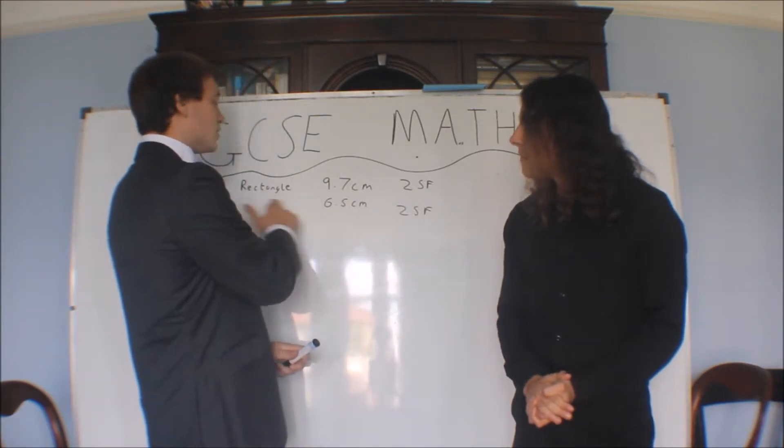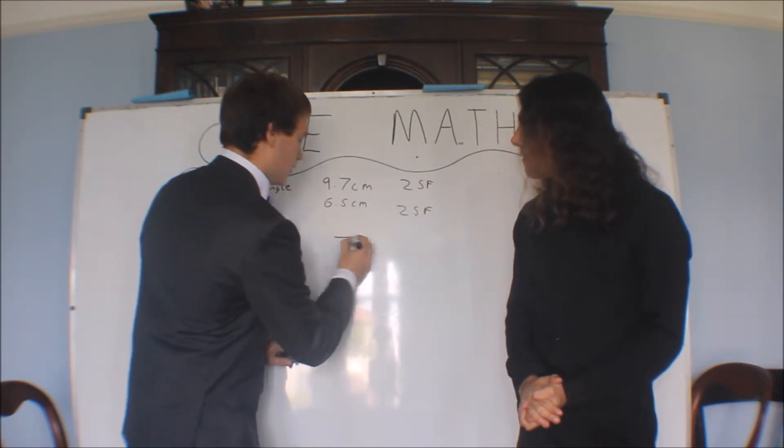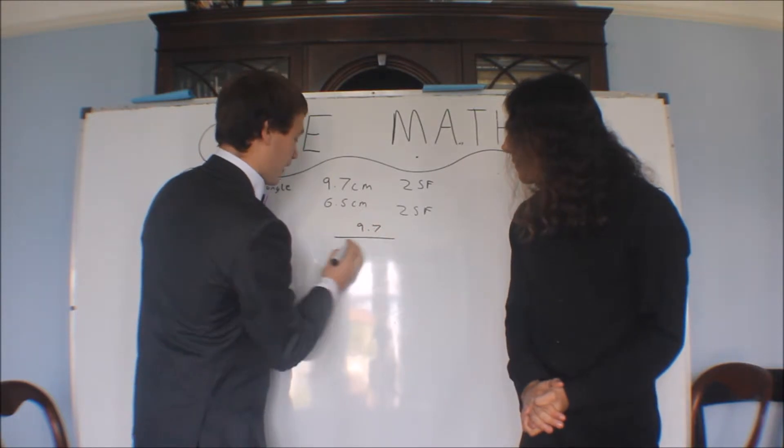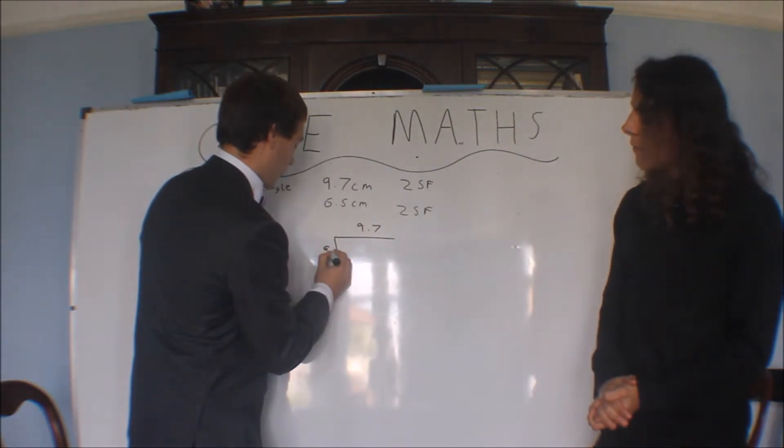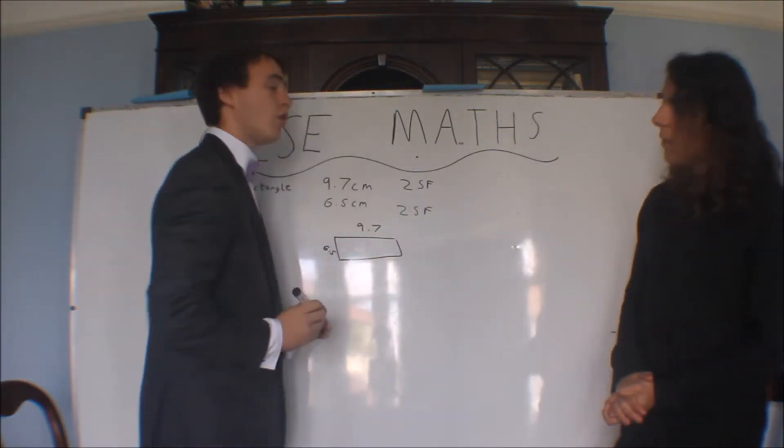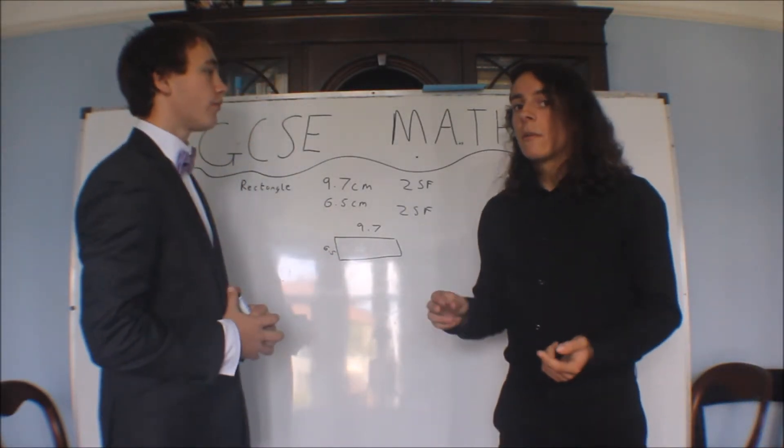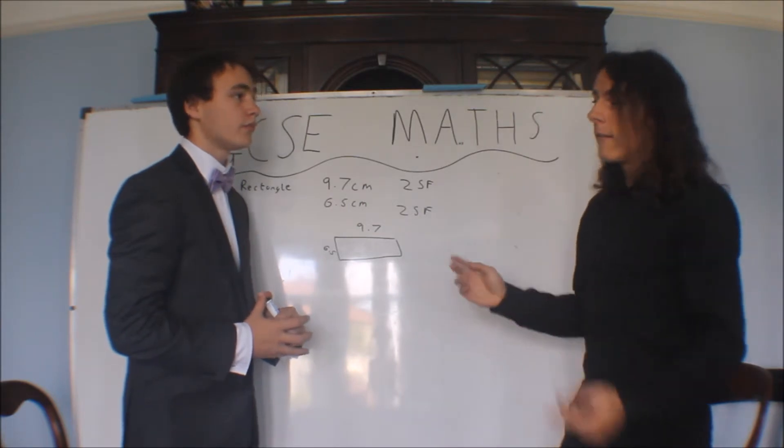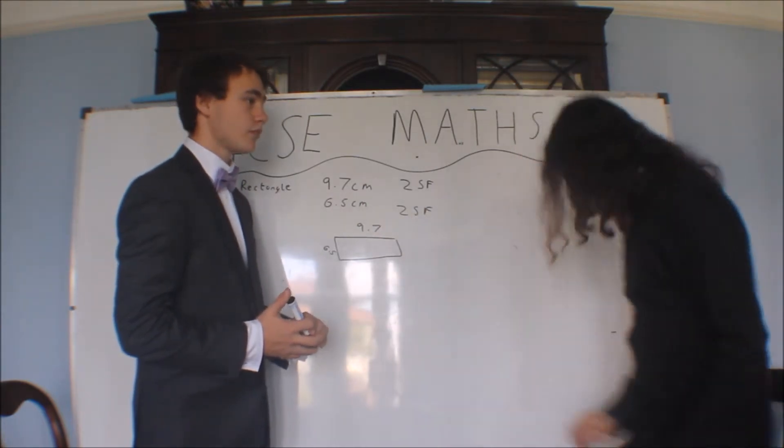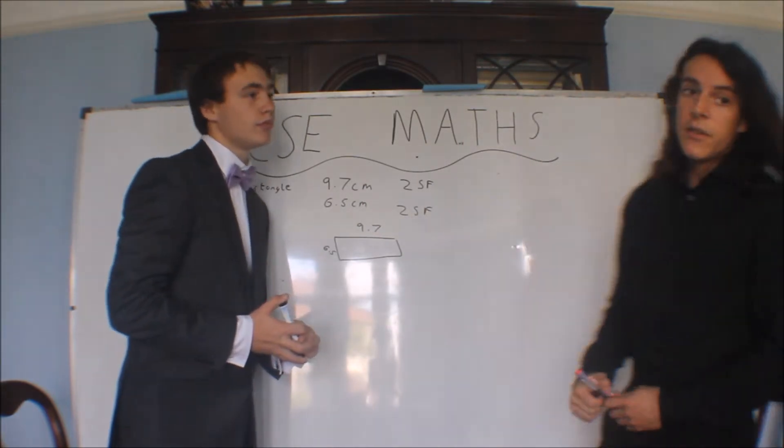So, if you're told that this is a rectangle, and it would be 9.7 roughly that direction, 6.5. Work out the upper and lower bounds of the area of this rectangle. So what we need to do is work them out both separately, and the area's length times width.